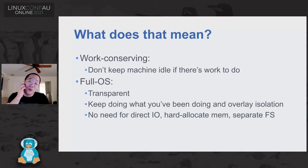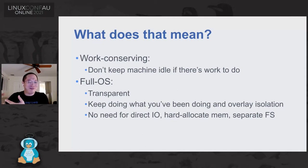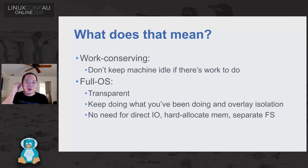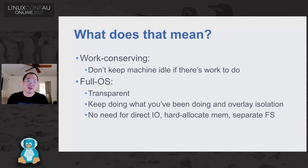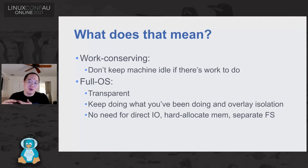Full OS means that we want to be transparent — we don't want applications to have to do things they usually don't do, like using only direct IOs or not being able to use buffered IOs or swap. We want applications to do exactly the same thing they've been doing, and we just want to enforce resource control on top in a transparent manner.